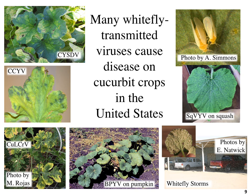There are many whitefly transmitted viruses that cause disease on cucurbit crops in the United States. Many cause yellowing of leaves. In this slide you see three viruses with nearly identical symptoms of interveinal yellowing: Cucurbit yellow stunting disorder virus (CYSDV), Cucurbit chlorotic yellows virus (CCYV), and Beet pseudoyellows virus (BPYV). Other viruses may show symptoms like vein clearing or leaf crumpling and yellowing. All of these viruses are transmitted by whiteflies and can be transmitted by small or large populations — as large as whiteflies looking like fog or snow over a field, as shown in a photograph taken in the Imperial Valley of California.